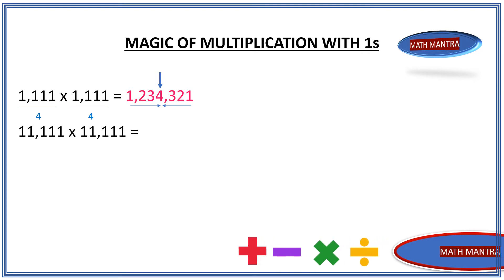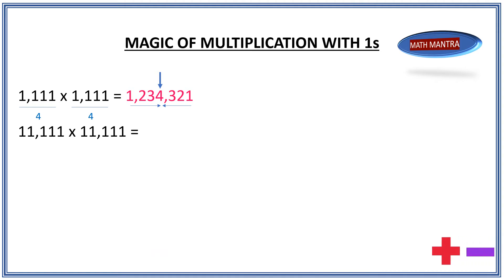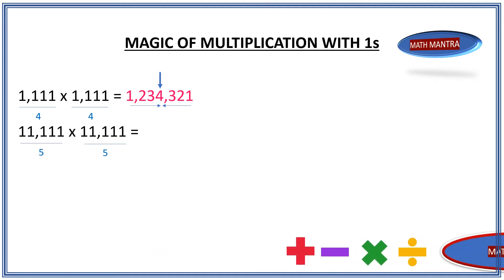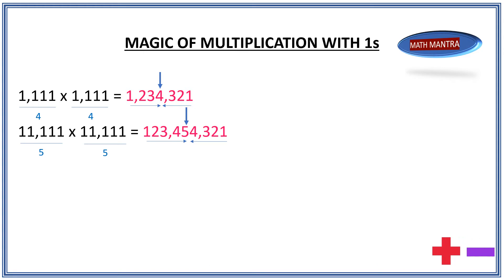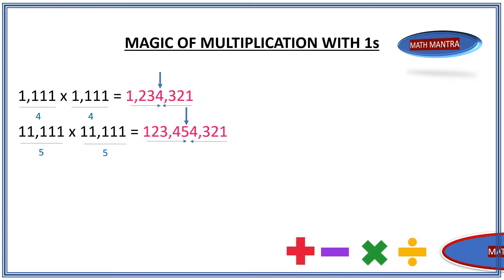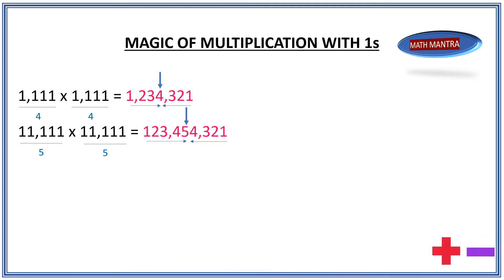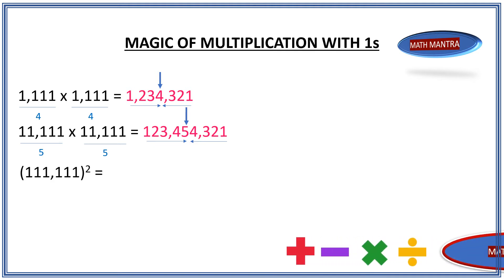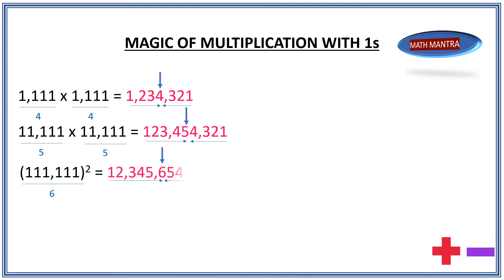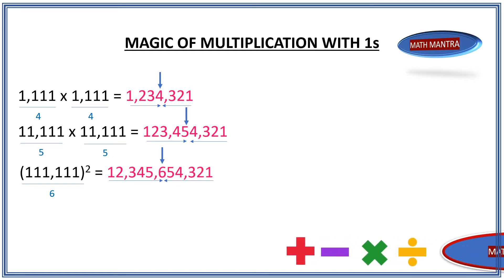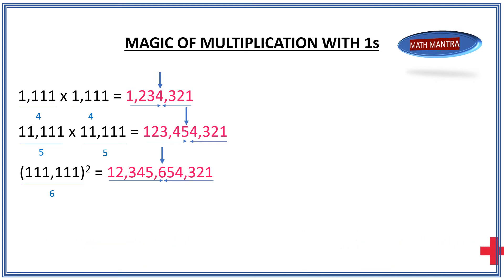What if we do 11111 times 11111? The number of digits is 5, so we go from 1 all the way to 5 and come back down to 1: 1, 2, 3, 4, 5, 4, 3, 2, 1 — which is 123,454,321. And for 111111 squared, the number of digits is 6, so the number becomes 12,345,654,321. Easy, isn't it?